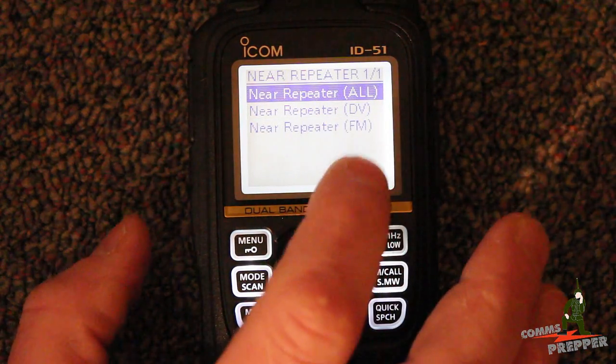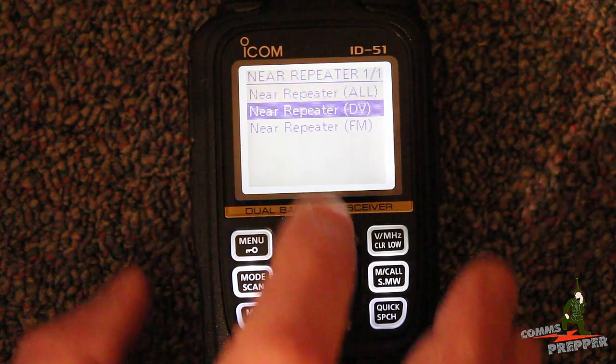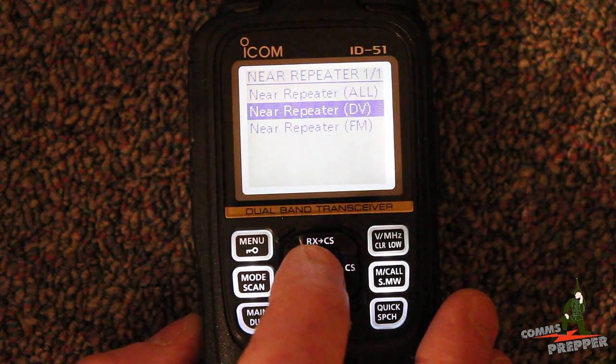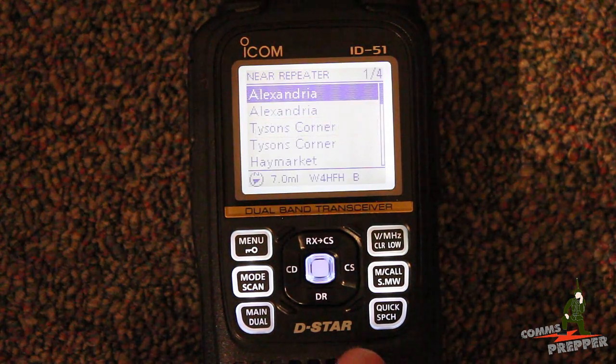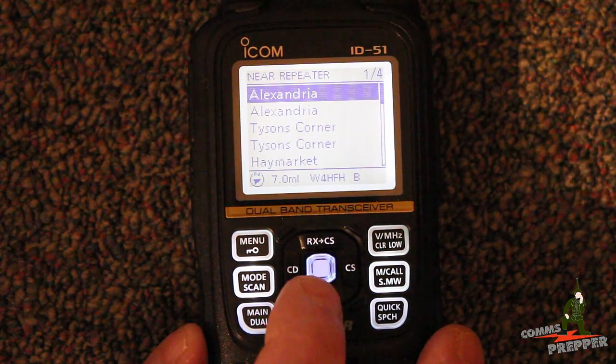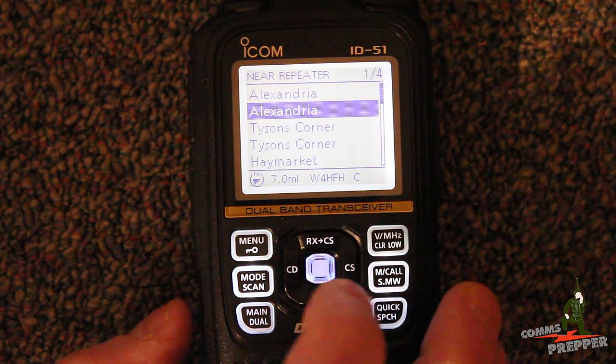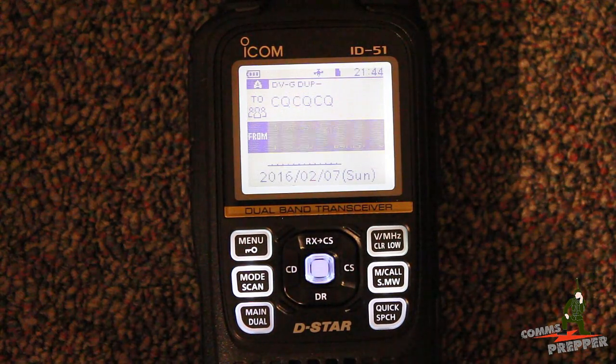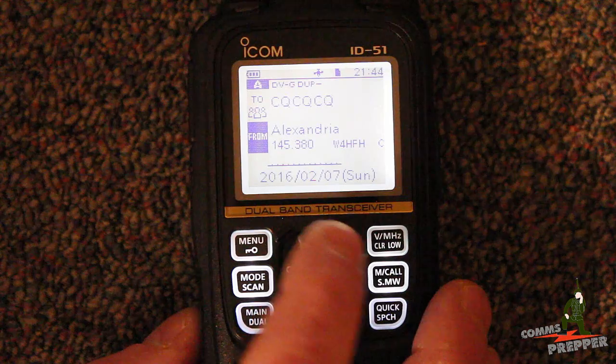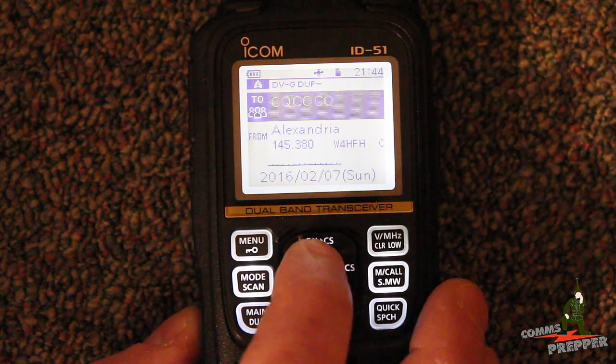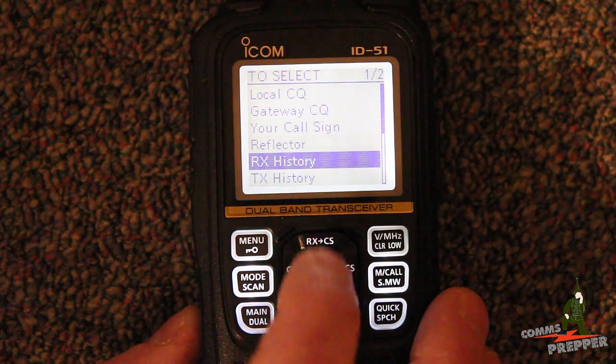I have the option of all repeaters, digital voice repeaters or traditional FM analog repeaters. We're going to go with the DV or D-STAR digital voice repeaters. It's going to search the list. We're going to come down here to Alexandria W4HFHC, that's the VHF side. Now we're going to come up here to who I'm going to call because right now I'm just set up to be local.